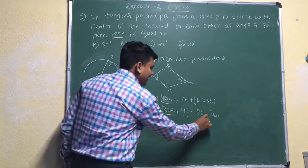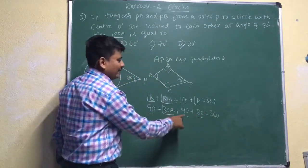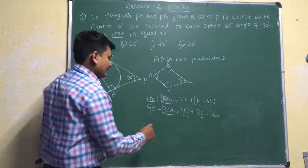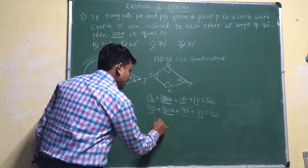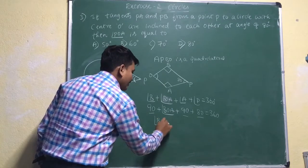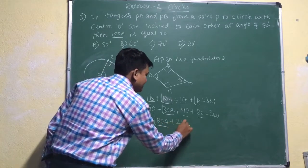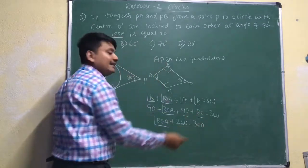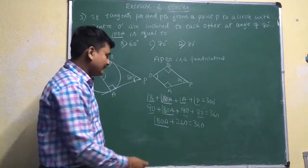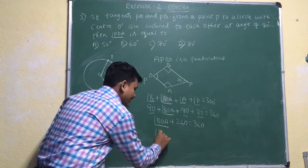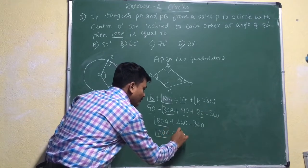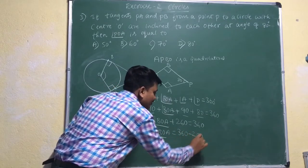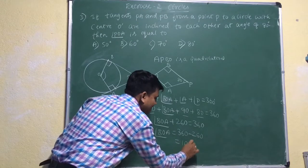Now we can add 90, 90, and 80. 90 plus 90 is 180, and 180 plus 80 is 260. So, angle BOA plus 260 equals 360 degrees. Sending 260 to the other side, angle BOA equals 360 minus 260, which gives us 100 degrees. So the full angle BOA is 100 degrees.